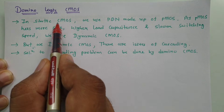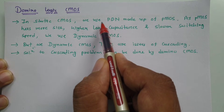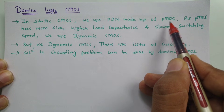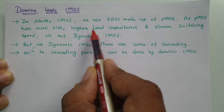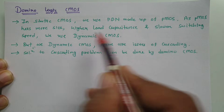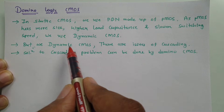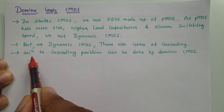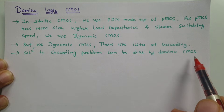In Static CMOS, we were making circuits by having pull-up and pull-down networks. The pull-down network is made up of PMOS, and because of PMOS it has more size, higher load capacitance, and slower switching speed. To avoid the issues of PMOS, we use Dynamic CMOS. But in Dynamic CMOS, we have seen there are issues regarding cascading, and to avoid those problems, the solution is Domino CMOS.